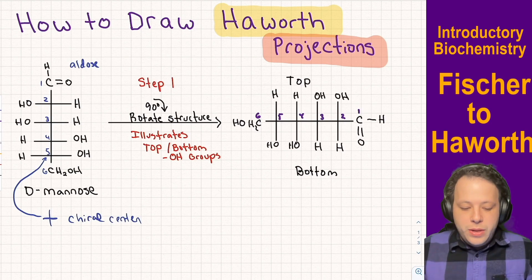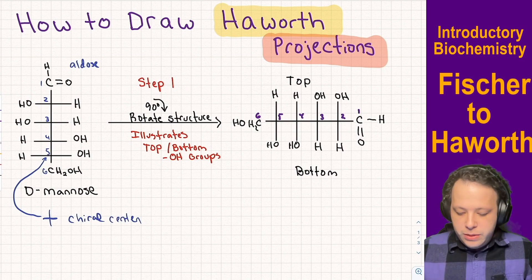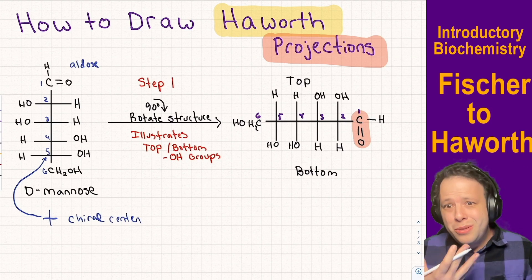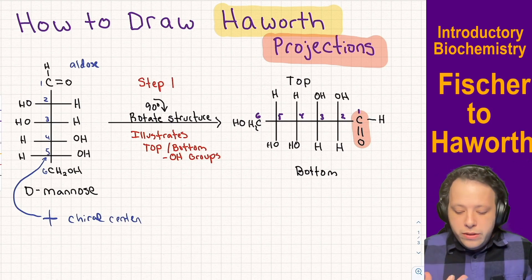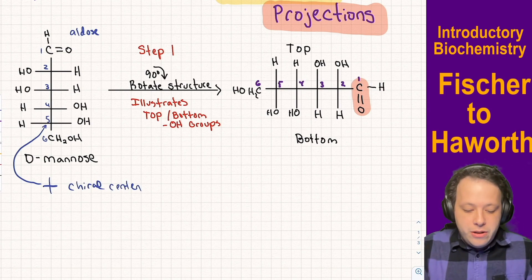Now we have to figure out how the reaction is going to occur. If you remember from my previous video on hemiacetals and acetals, the big idea is that the aldehyde or the ketone is going to be reacting with an alcohol. However, there are five different alcohols on the structure, so which one do you pick? Let's try to draw it as a ring structure and illustrate what happens if the last alcohol reacts.